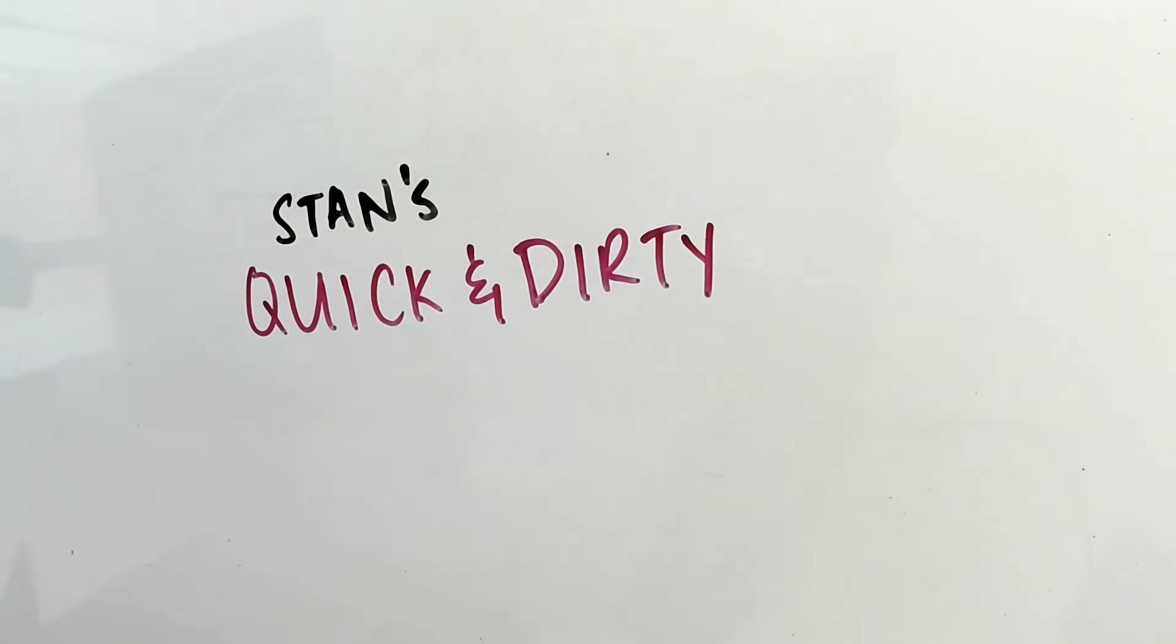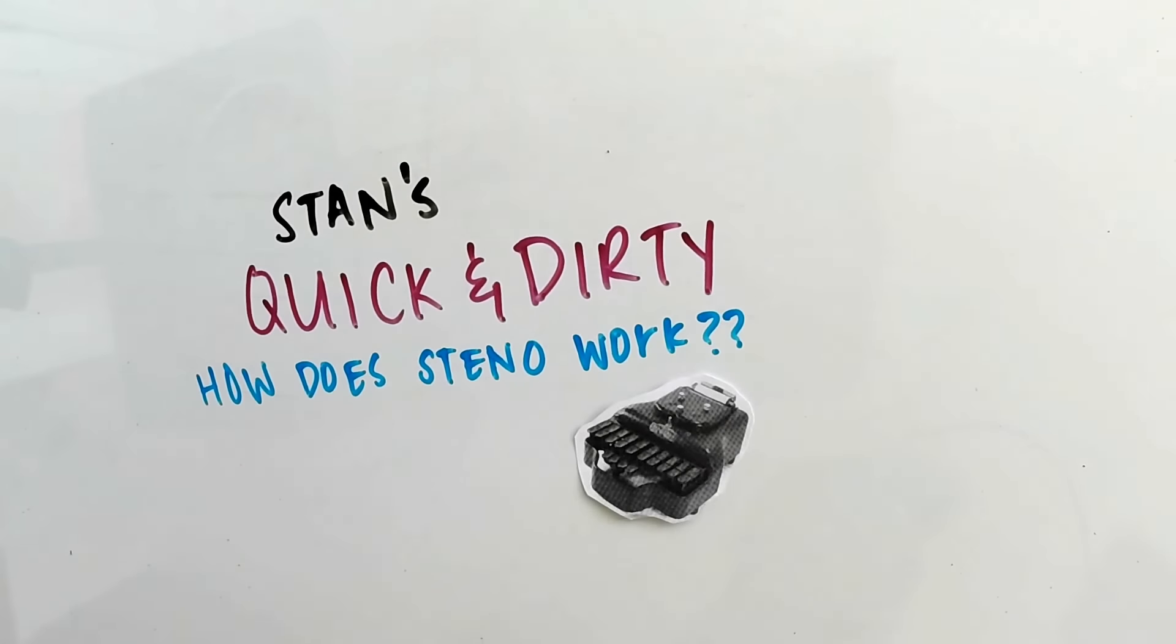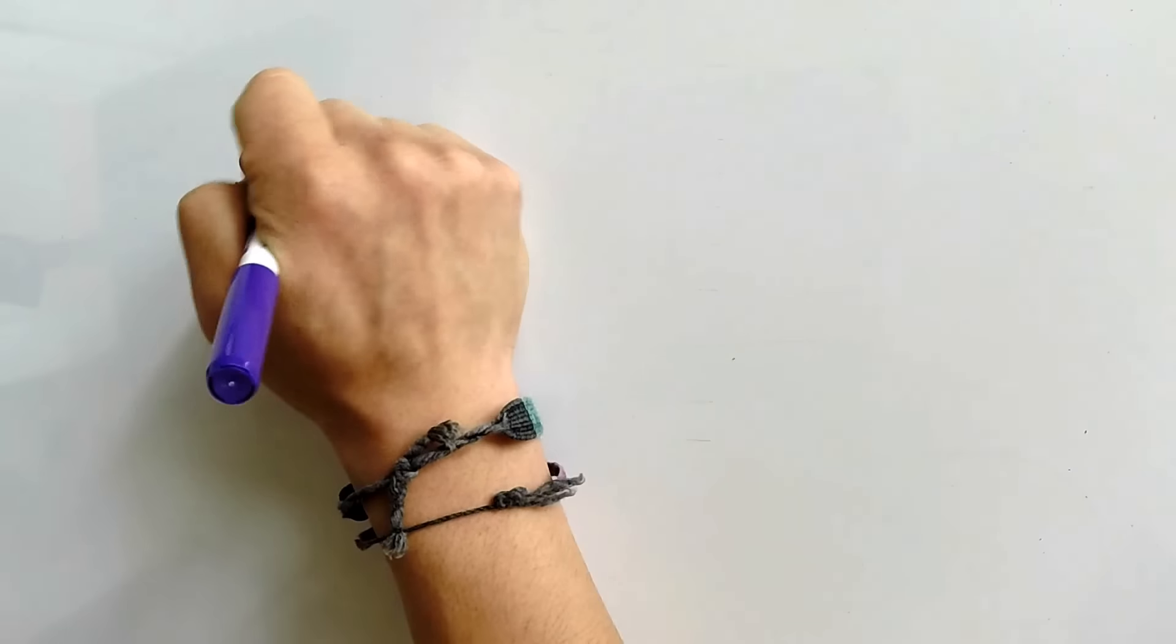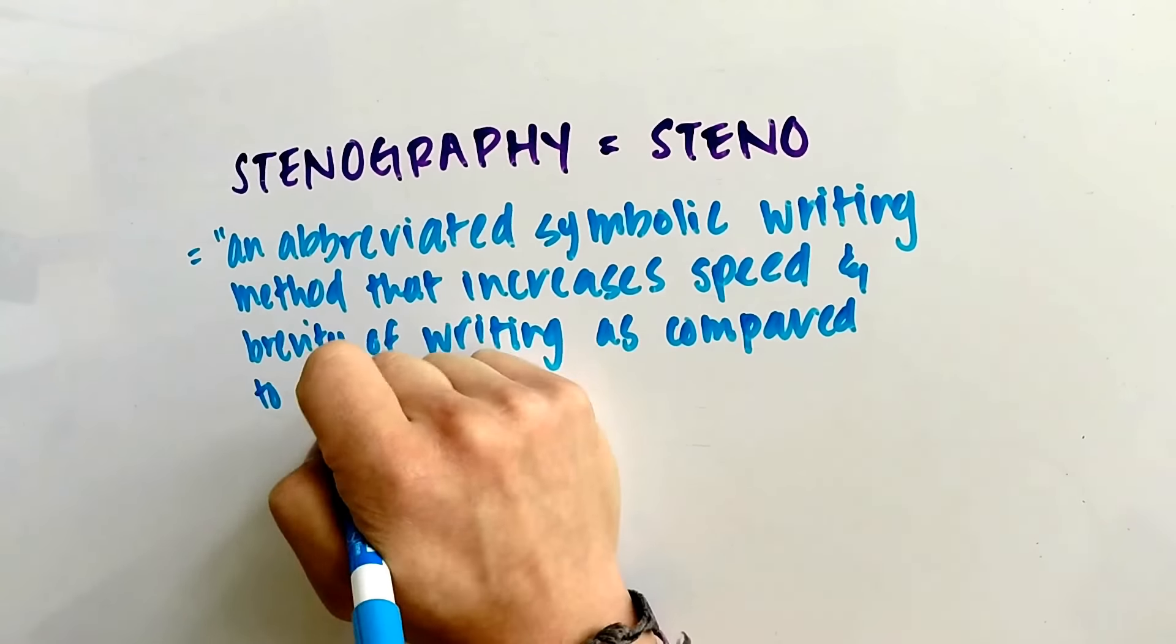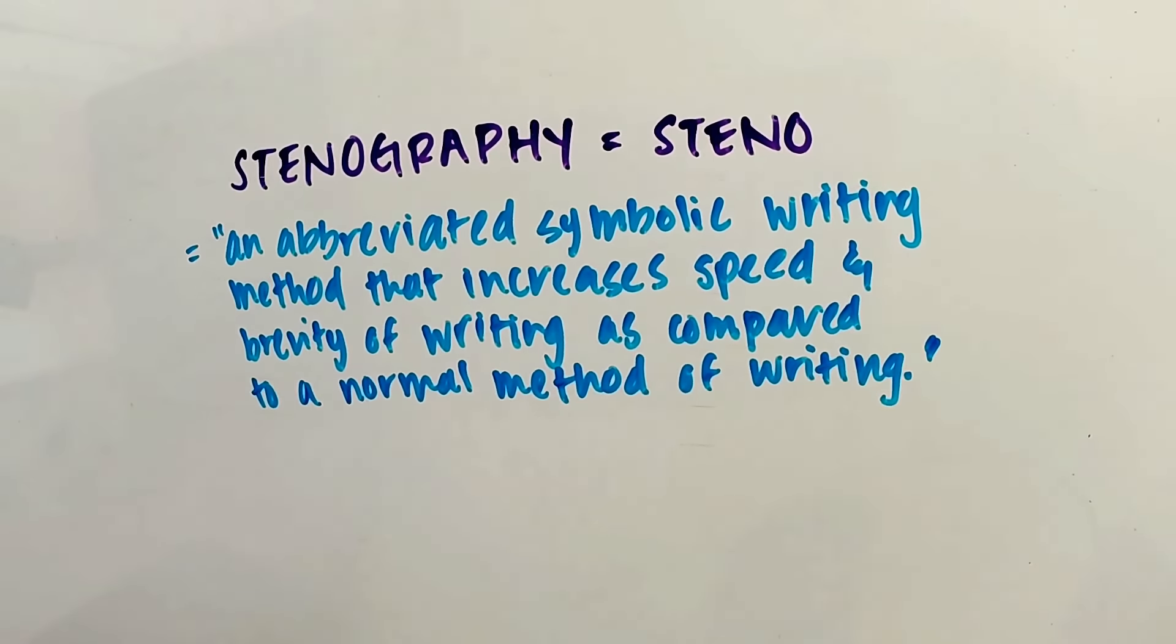Welcome to Stan's quick and dirty video on how steno works. Steno, which is short for stenography, also known as shorthand, is an abbreviated symbolic writing method that increases speed and brevity of writing as compared to a normal method of writing a language, with the ultimate goal being the ability to write as fast as someone can speak.